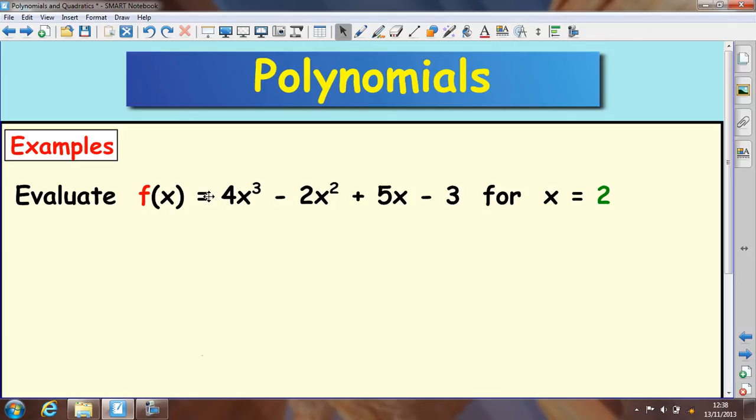If we've got f(x) = 4x³ - 2x² + 5x - 3, and we're told that x is 2, we want to evaluate this. You just substitute 2 into it.